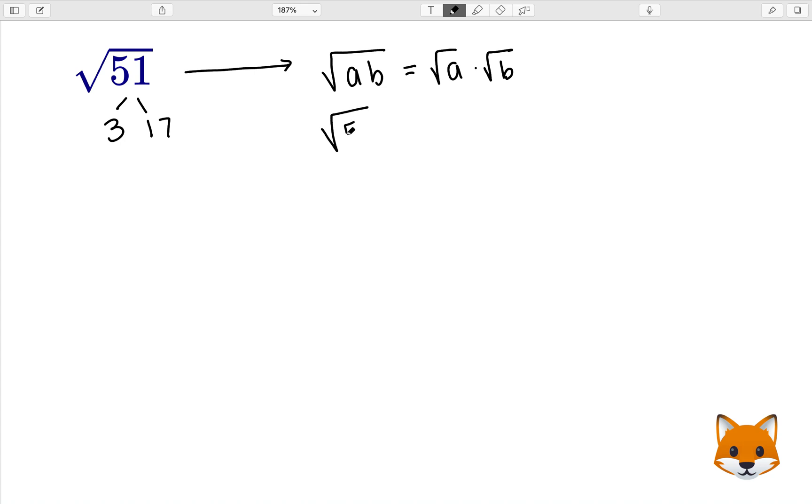Applying this rule, we would do the square root of 51 equals the square root of 17 times 3, and then we can break that square root apart to get the square root of 17 times the square root of 3.